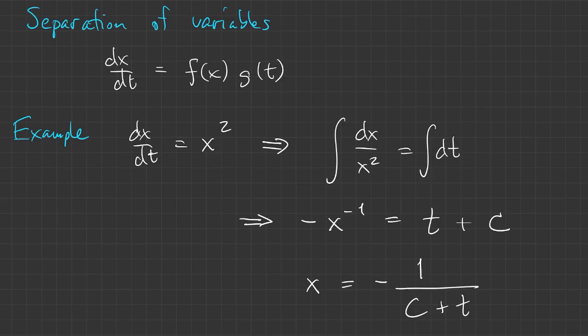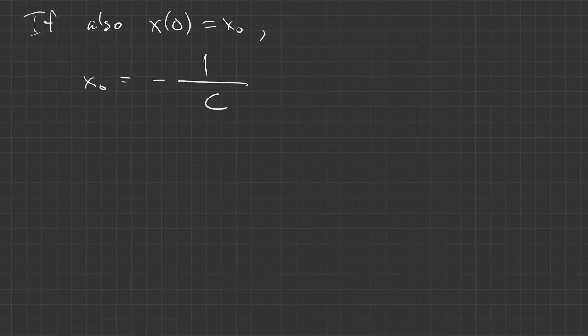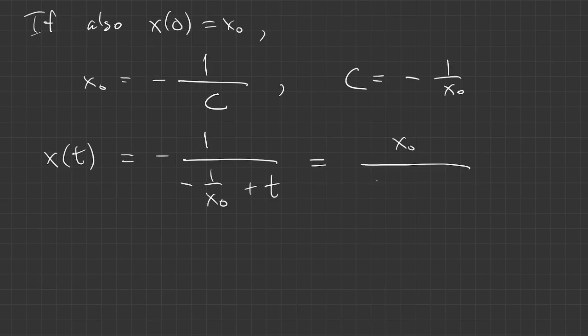What we get is a general solution with an arbitrary constant in it, but it's not appearing in the same form as it did in a linear problem as c times a homogeneous solution. Now if we also have the initial condition x sub 0 equals x0, we can put that into the solution and solve for c. When we put that back into the solution, we can rearrange it. So there's our solution for any initial value.